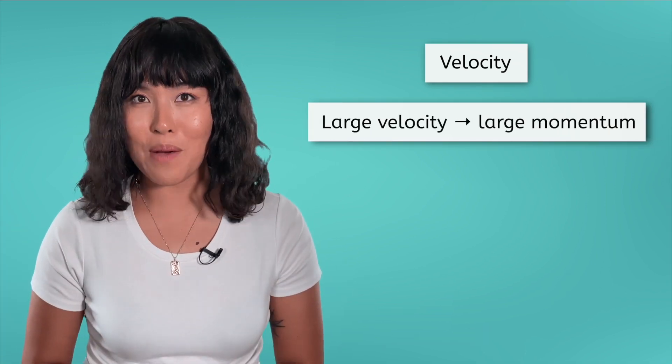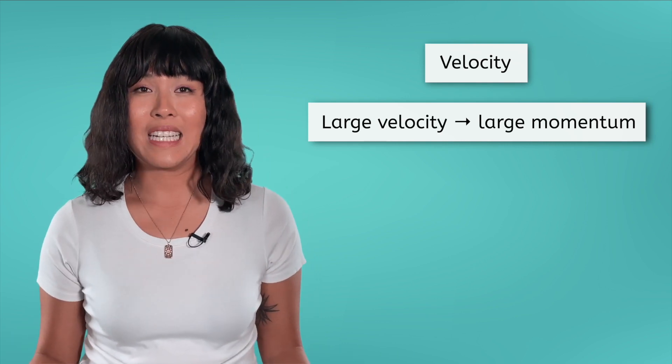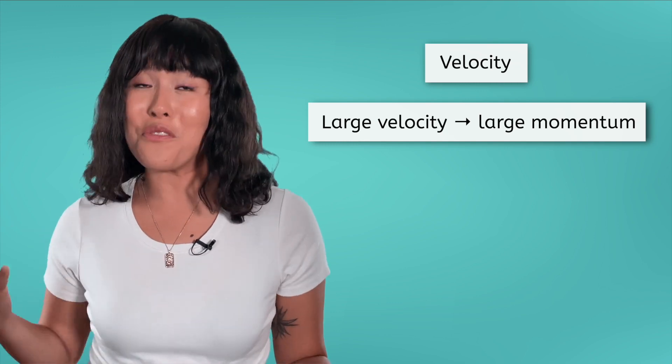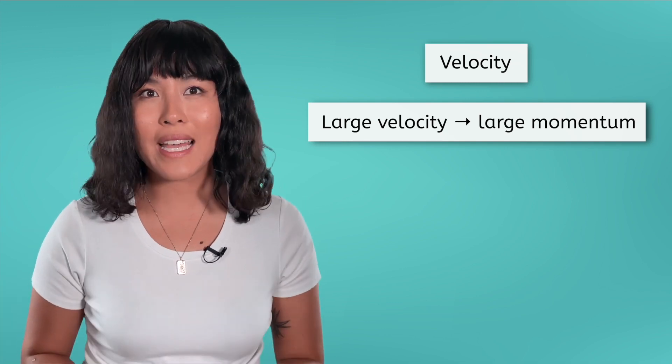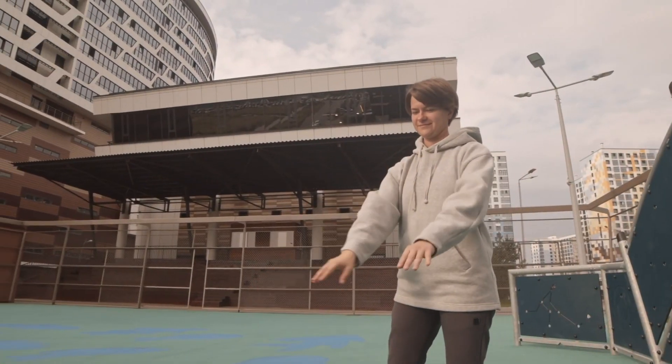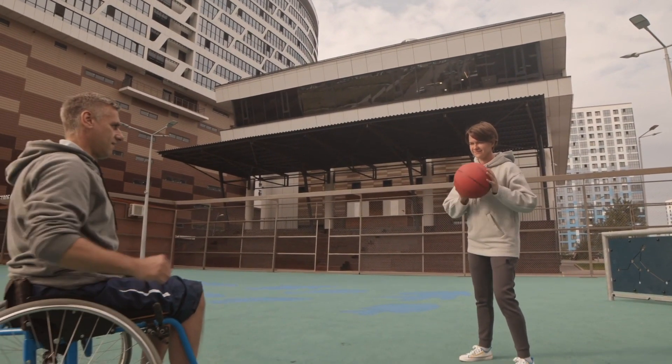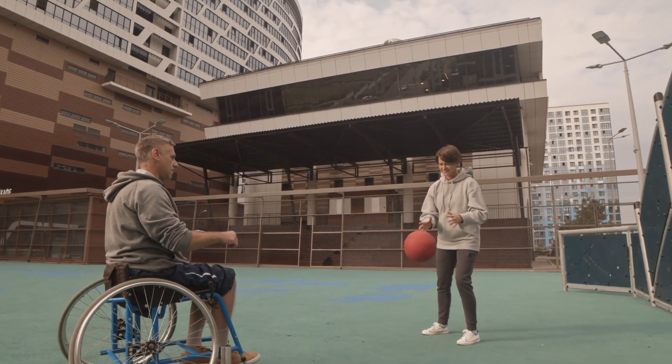Have you ever played catch with a baseball? When you were little, chances are your catch partner threw the ball to you very slowly to keep from knocking you over. Now that you're a bit bigger, you can handle a faster throw. Scientifically, what's the difference between these two throws? Their velocity. When an object hits you with a large velocity, it has a large momentum. You will experience that momentum as a force that pushes you backward. If the momentum is high enough, you might even fall over. You can experiment with this by playing catch with a friend or sibling — try throwing the ball back and forth gently, then launch it to each other with some real speed. You'll feel the change in momentum.